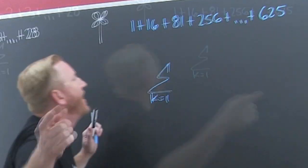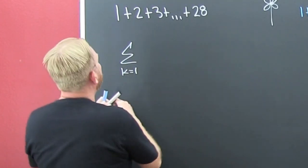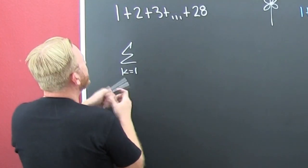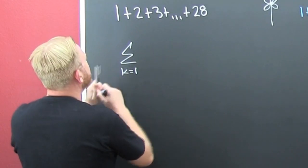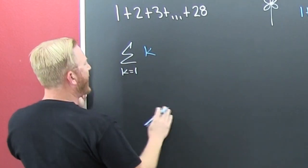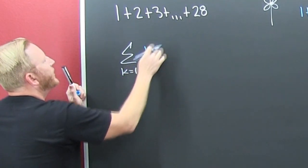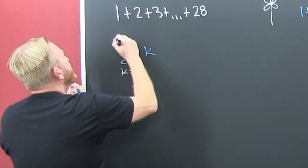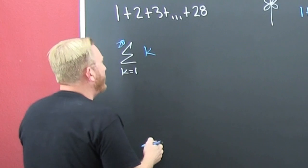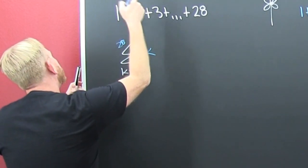That camera's just a little bit out. Alright, here we go. Let's just call that K and see what happens. Let's go K from 1 to where? 28. Let's check and see whether or not that's going to produce that series.